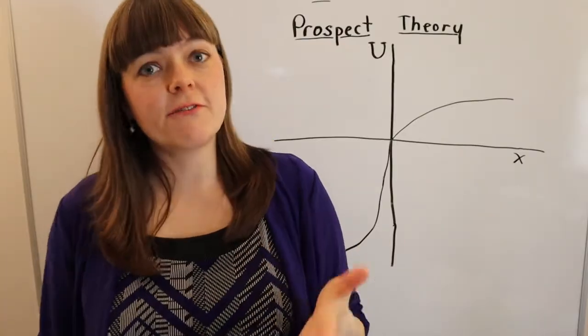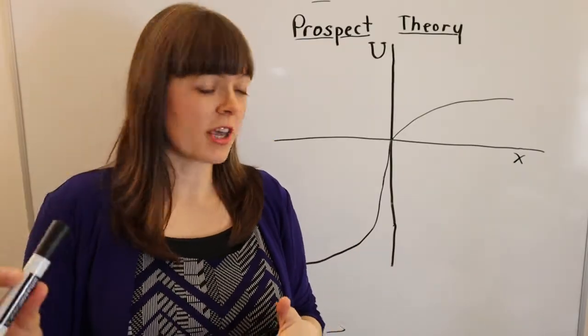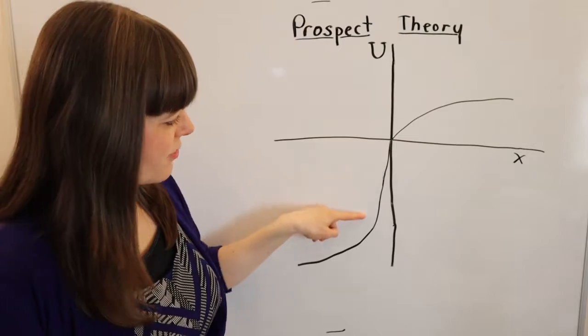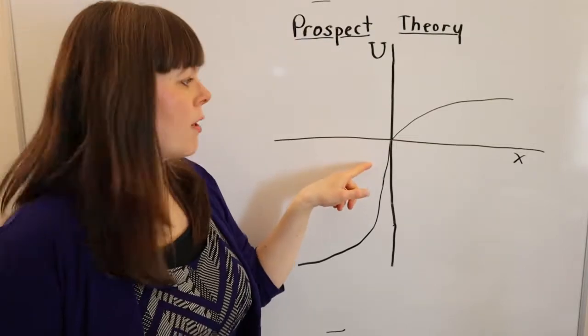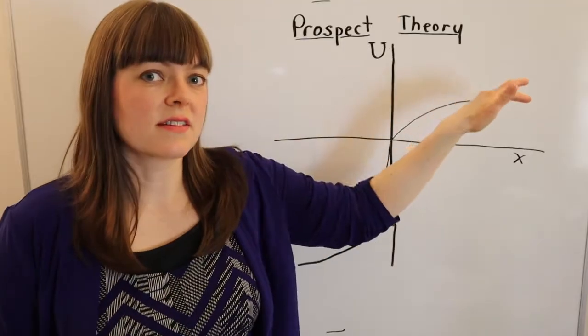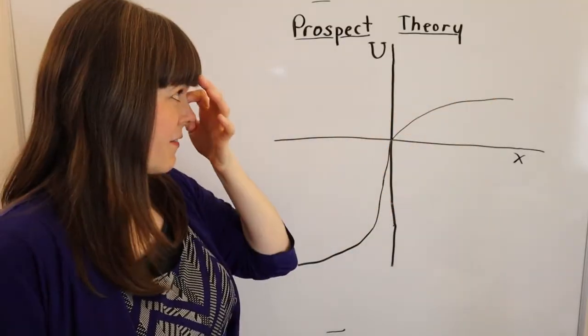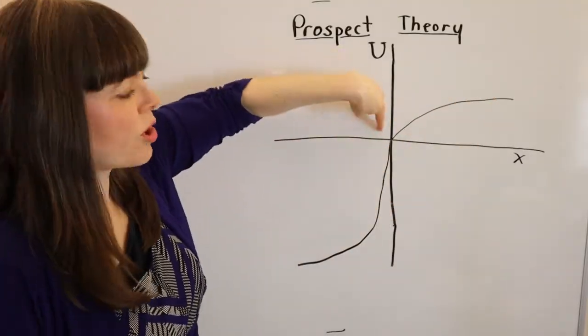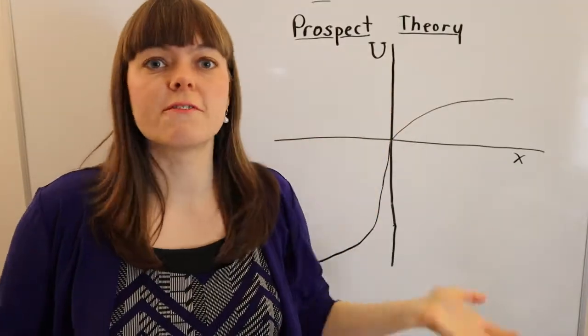And there's really three key features of prospect theory that I'll be talking about. One is the idea of loss aversion, the fact that people hate losses more than they love gains. And then the second is the fact that prospect theory needs an origin of some sort, so how do you define that origin?